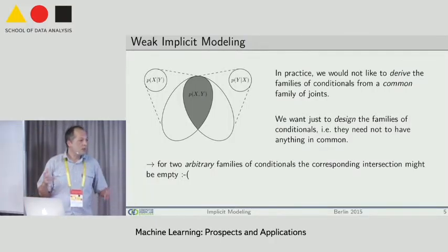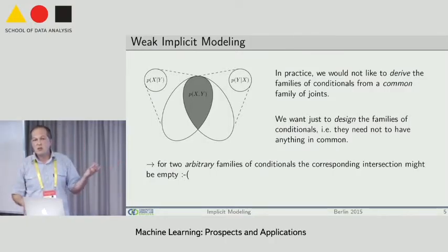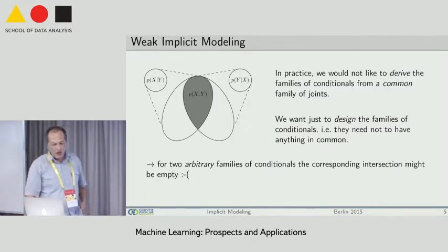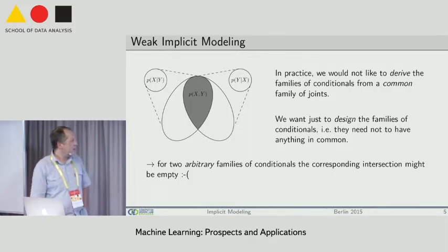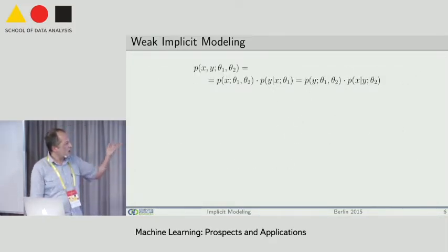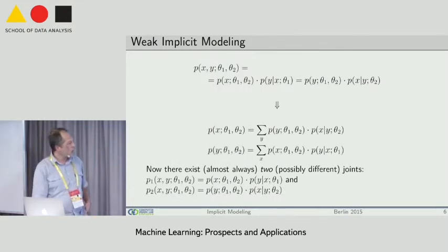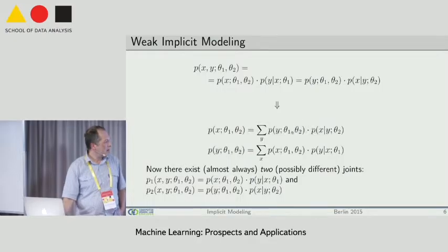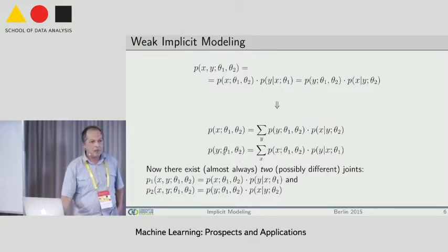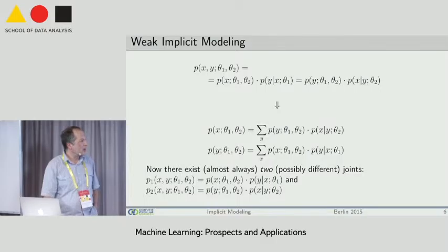There is a problem: if you design just an arbitrary family of conditionals, it may be the case that the corresponding intersection is empty — you have nothing to learn. To alleviate this problem, we weaken the condition a little bit. The original condition requires it to hold for all x, y values. We instead demand only that marginalizing over y gives p(x), and marginalizing over x gives p(y). This is of course a weaker condition. If the strong condition holds, this holds automatically, but not vice versa.